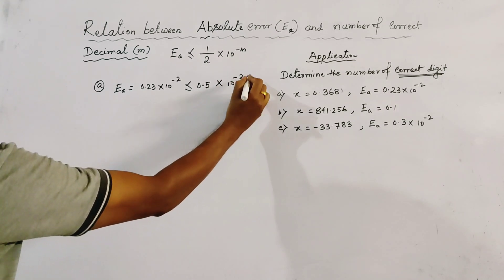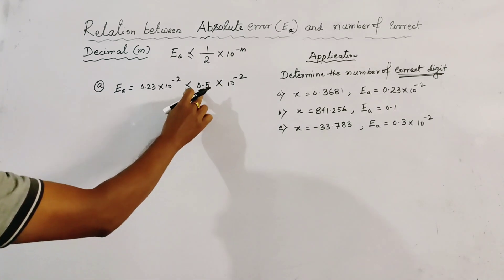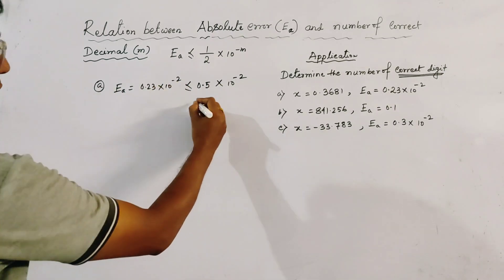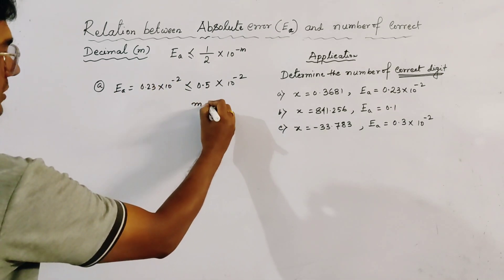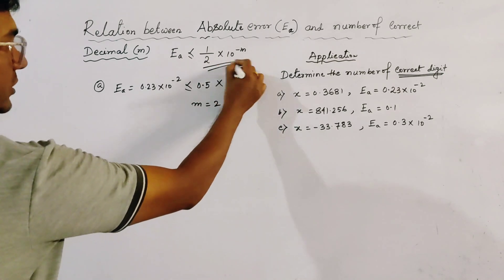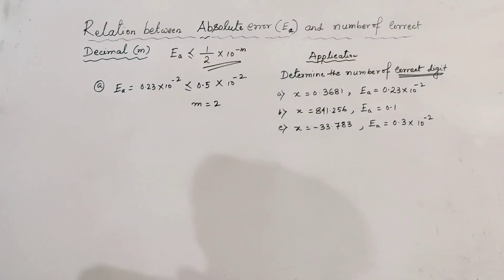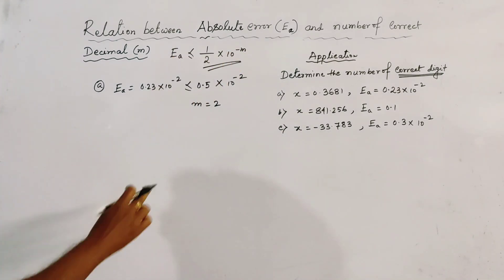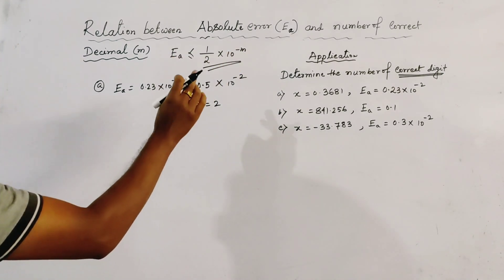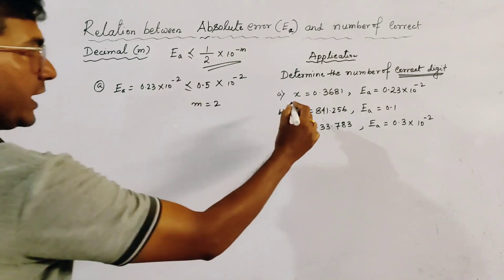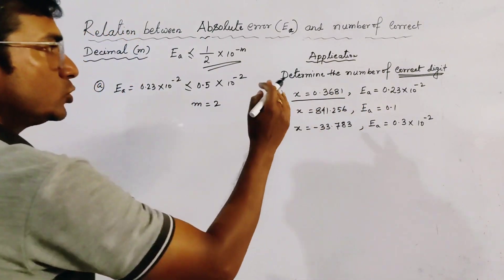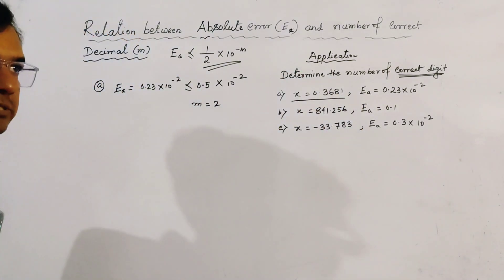This can be written as less than or equal to 0.5 × 10^(-2). Comparing with the relation ea ≤ (1/2) × 10^(-m), we get m = 2. That means the number x is correct to 2 decimal places.